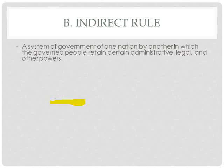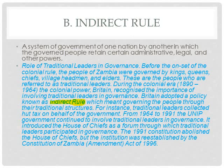Indirect rule — option B — is a system of government of one nation by another, in which the governed people retain certain administrative, legal, and other powers. An example is traditional leader governance in Zambia during the colonial era of 1890 to 1964. Britain recognized the importance of involving traditional leaders and adopted a policy of indirect rule, governing people through their traditional structures.